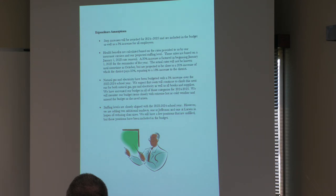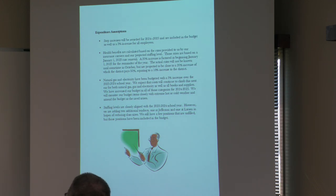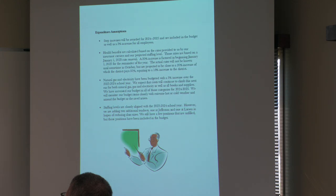We've been told multiple times by MESA to expect a double-digit increase in insurance rates. For natural gas and electricity, I've budgeted about a 5% increase over this year. We've had a mild winter, so rates could go higher. Staffing levels are closely aligned with the 23-24 year, except we've added two teachers — one at Jefferson and one at Larson — to help reduce class sizes. We still have a few unfilled positions that are accounted for in this budget projection.